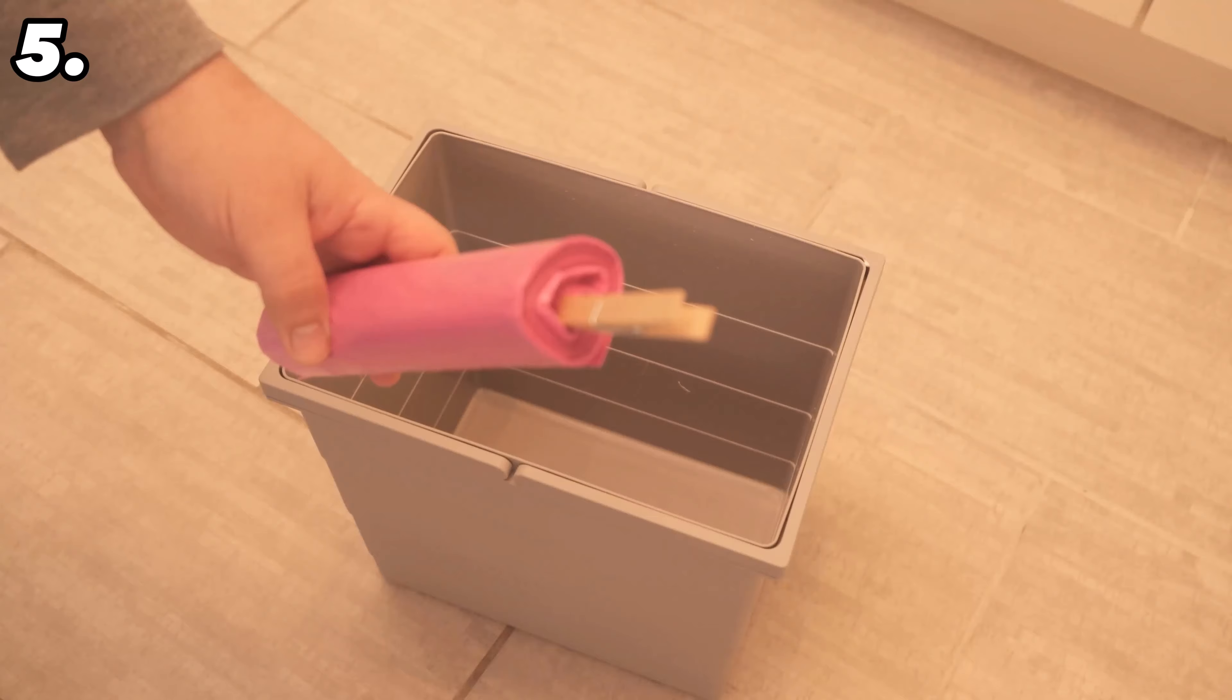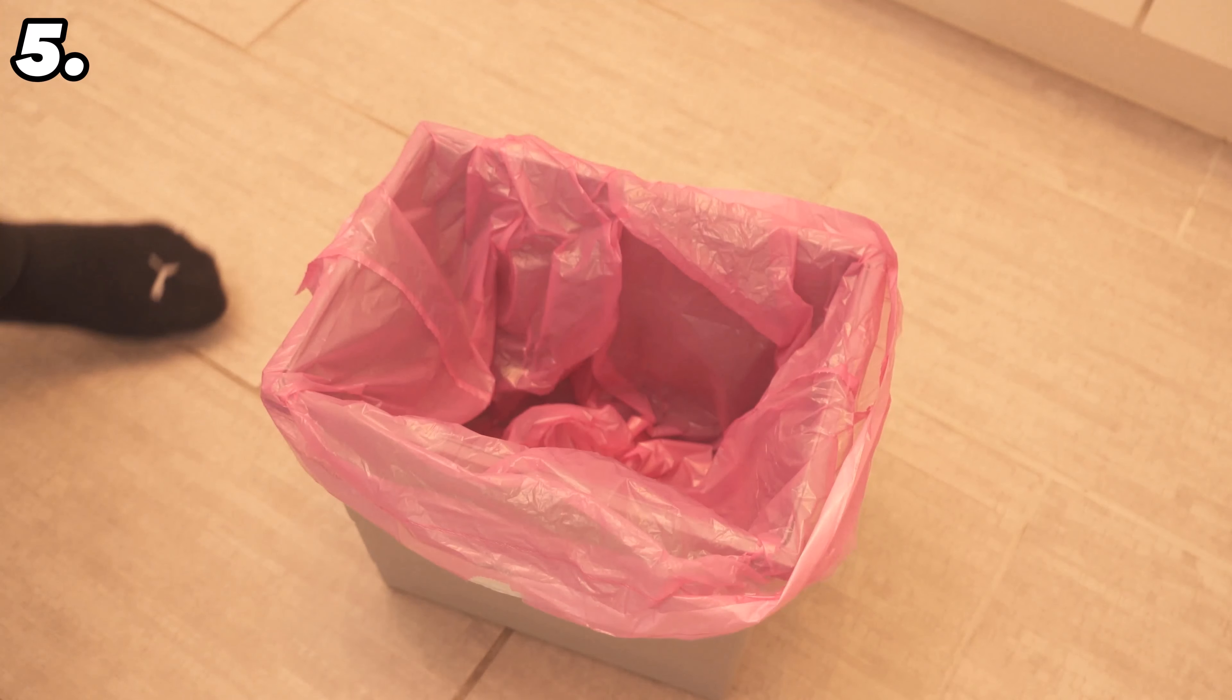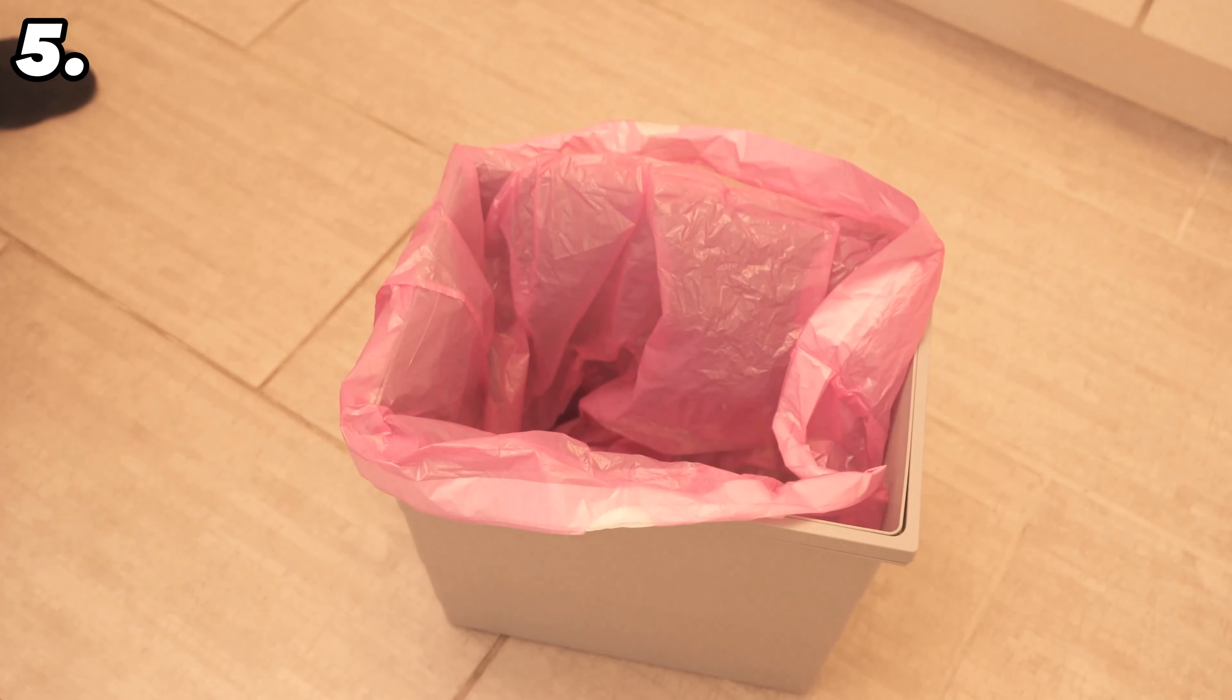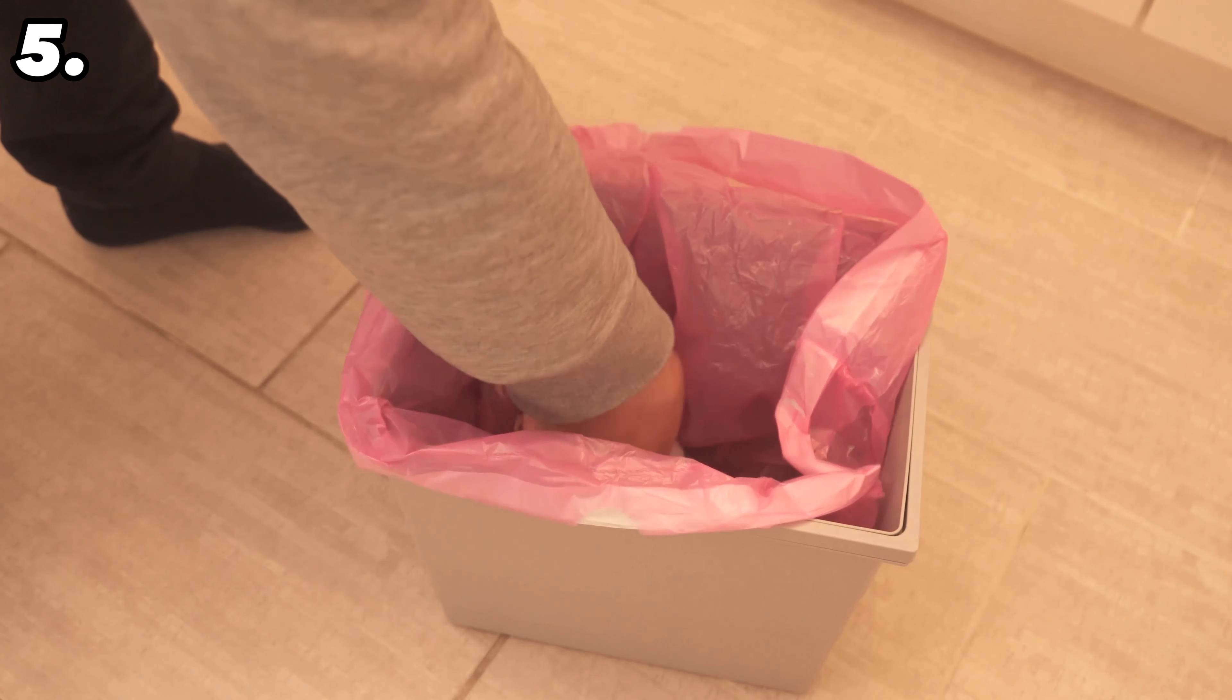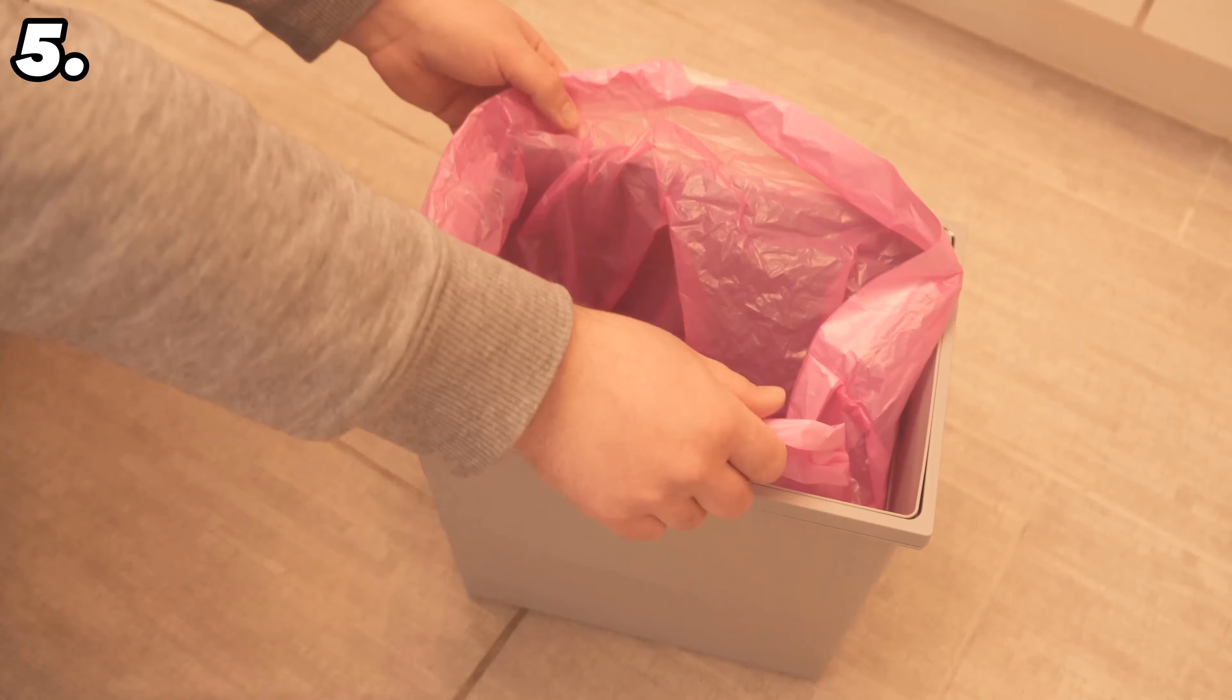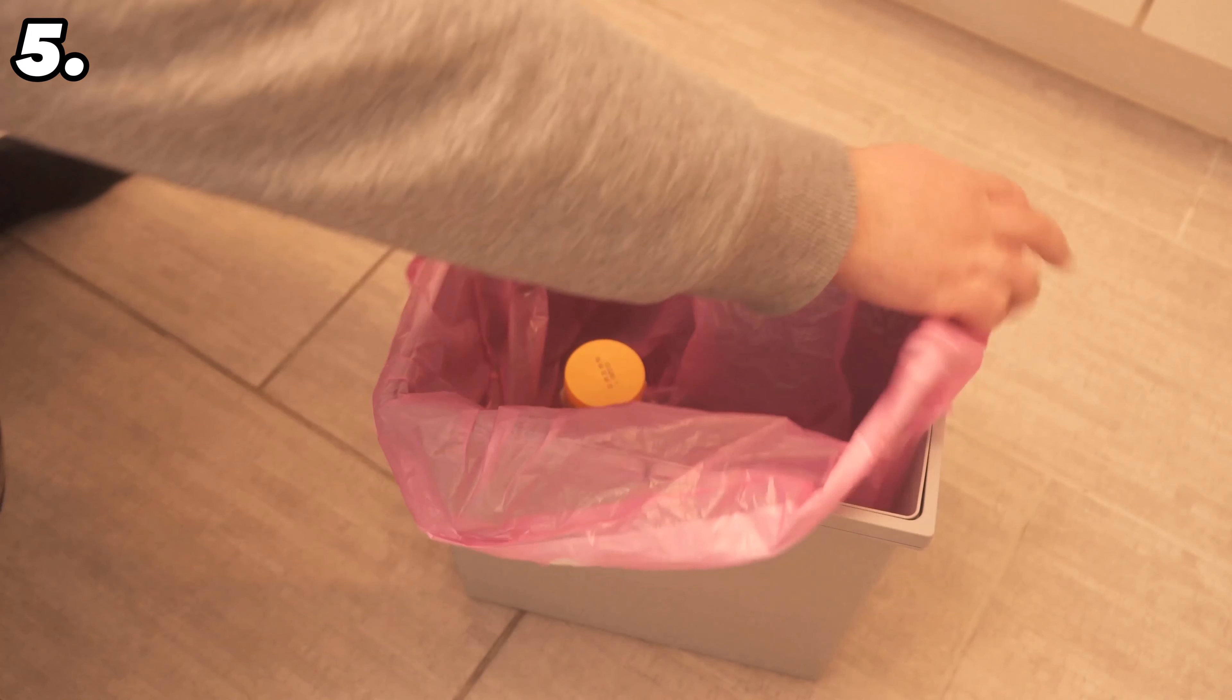You can even use the clothespin on your bin using bin liners to be precise. The following problem will certainly be familiar to you. You have pulled the bin liner over your bin, now you start throwing things into your bin. However, especially if they are a little larger or heavier, the bin liner sometimes slides down with them. This is exactly why you should use a clothespin.